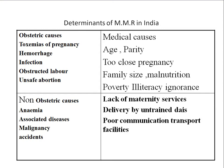Obstructed labor due to cephalopelvic disproportion makes vaginal delivery very difficult and requires caesarean section. A trained TBA should know to refer such cases to a higher center. Unsafe abortions from illegal pregnancies also cause maternal mortality. These are the major causes of maternal mortality.